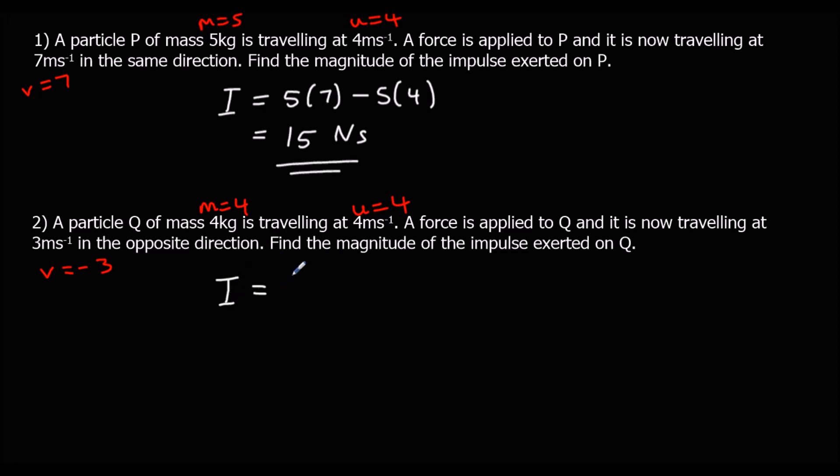So we've got MV minus MU. So negative 12 minus 16 will be negative 28. We only care about the magnitude, so we're going to ignore the negative. And we're going to say the impulse is 28 newton seconds.